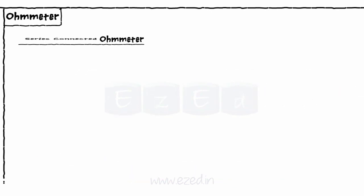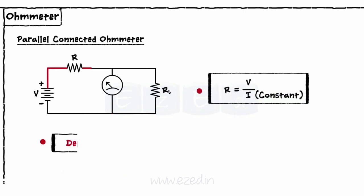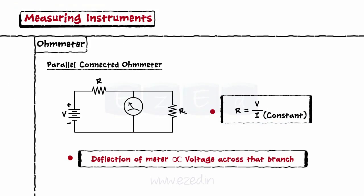The second is a meter connected in parallel. When a meter is connected in parallel to measure resistance, current is kept constant. Thus, the deflection in the meter becomes proportional to the voltage across that branch. And using Ohm's law, resistance can be easily determined.